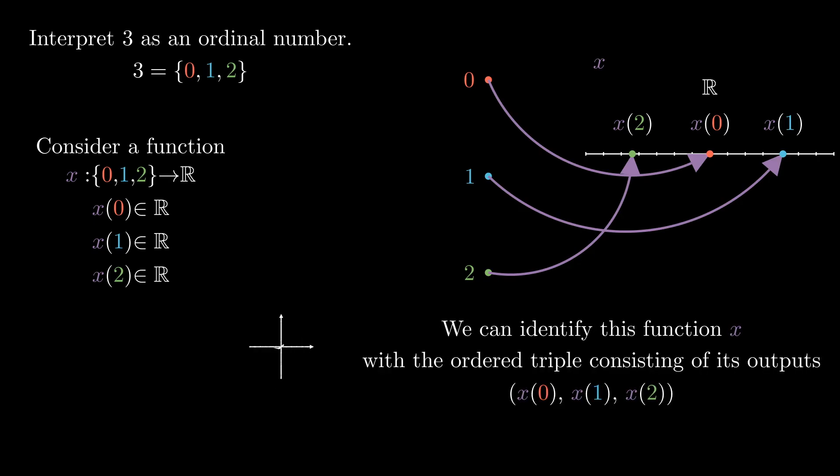And we can identify this function x with the ordered triple consisting of its outputs. In other words, we can think of this function x as being some point in space.